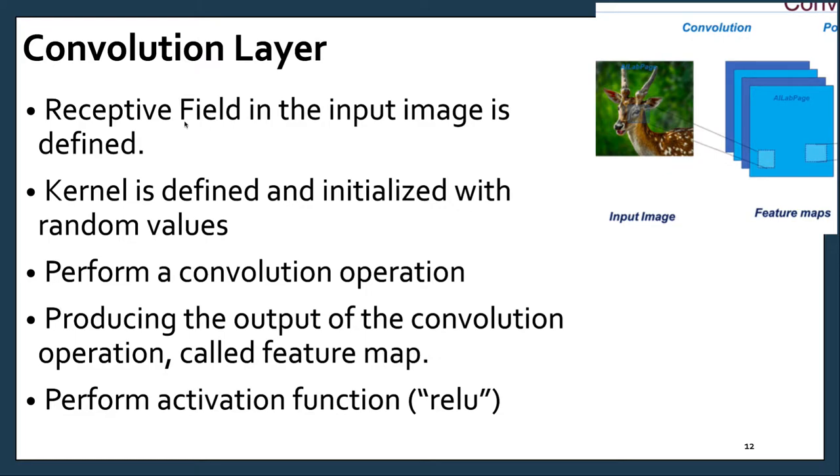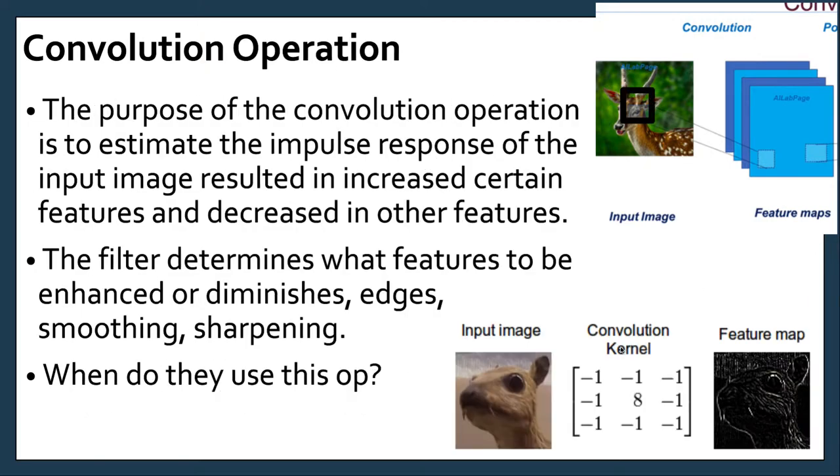Receptive field is the image, input image that is defined. A kernel, these are the matrices that you would do some filtering. You would do adjustment on the image. We call them kernels. We can see this more later. Then you would perform the convolution operation to get the features. Then you perform an activation function, which is the ReLU. The ReLU is the rectified linear unit. It means that any number below zero is converted to zero, while any positive number is allowed to pass.